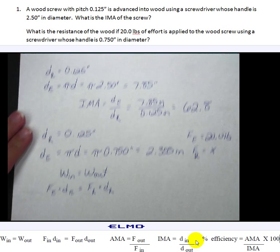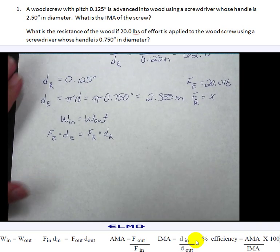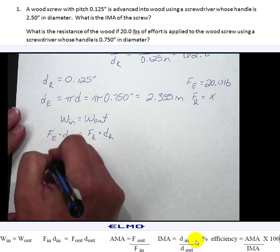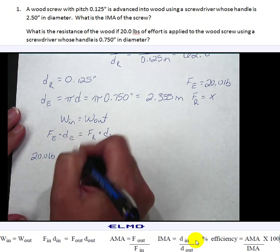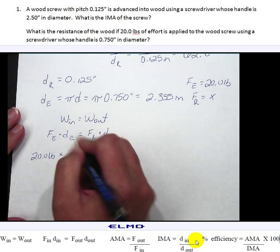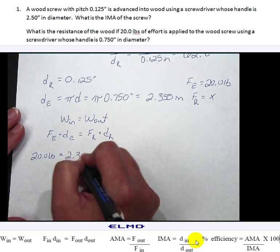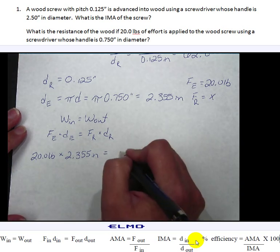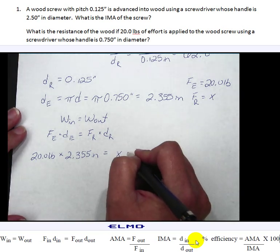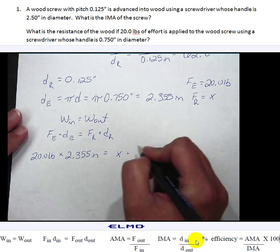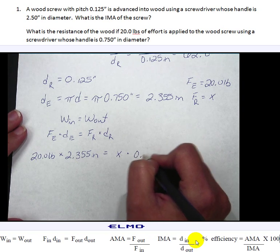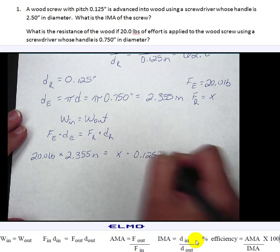So looking at this problem here we're going to say force of our effort is 20.0 pounds times the distance of our effort is 2.355 inches which equals the force of my resistance which is x because I don't know that amount. That's what I'm solving for. And the distance of my resistance which is 0.125 inches.